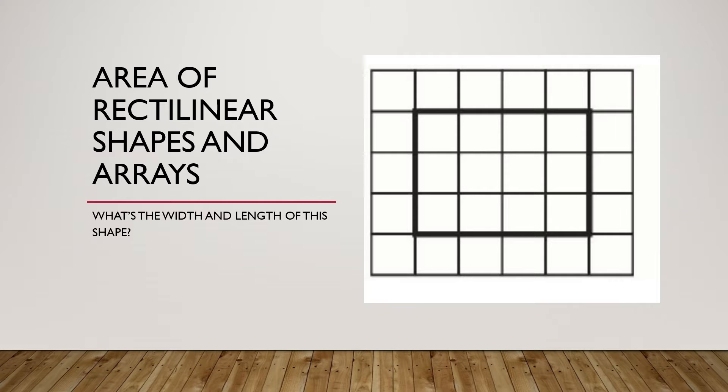Arrays, you might remember, are when you've got rows of stuff, kind of like an egg container, for example. So here we've got a picture. I want you to think about this: what is the width and length of this shape? Pause the video if you need to, if you already know, let's get straight on to it.